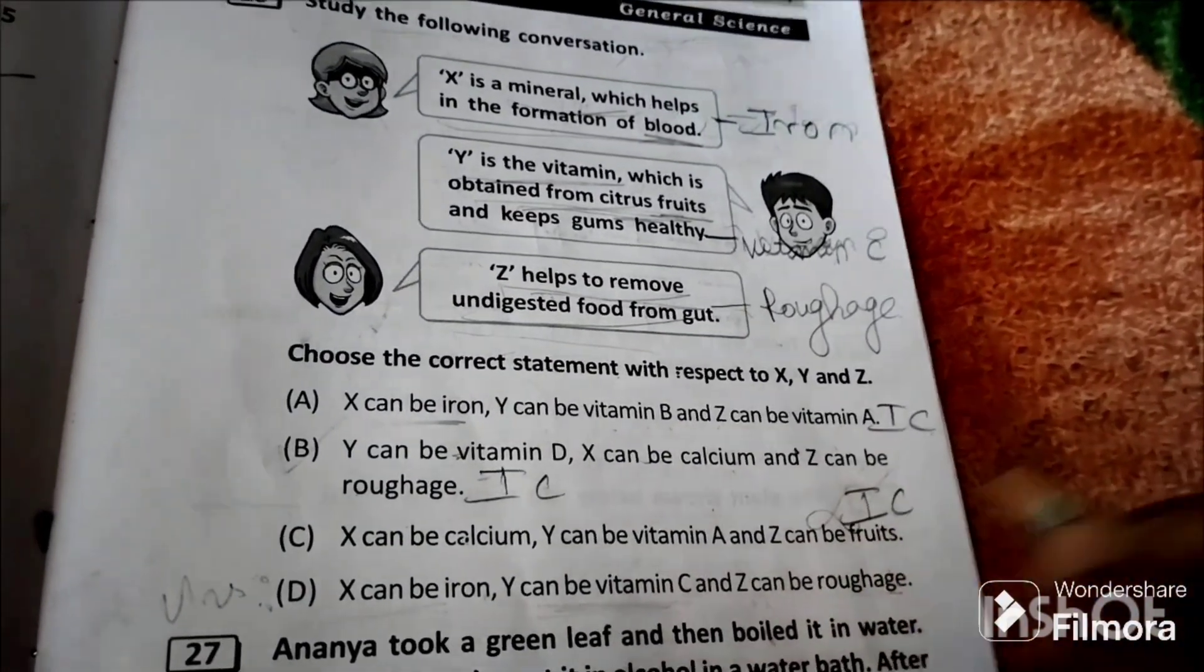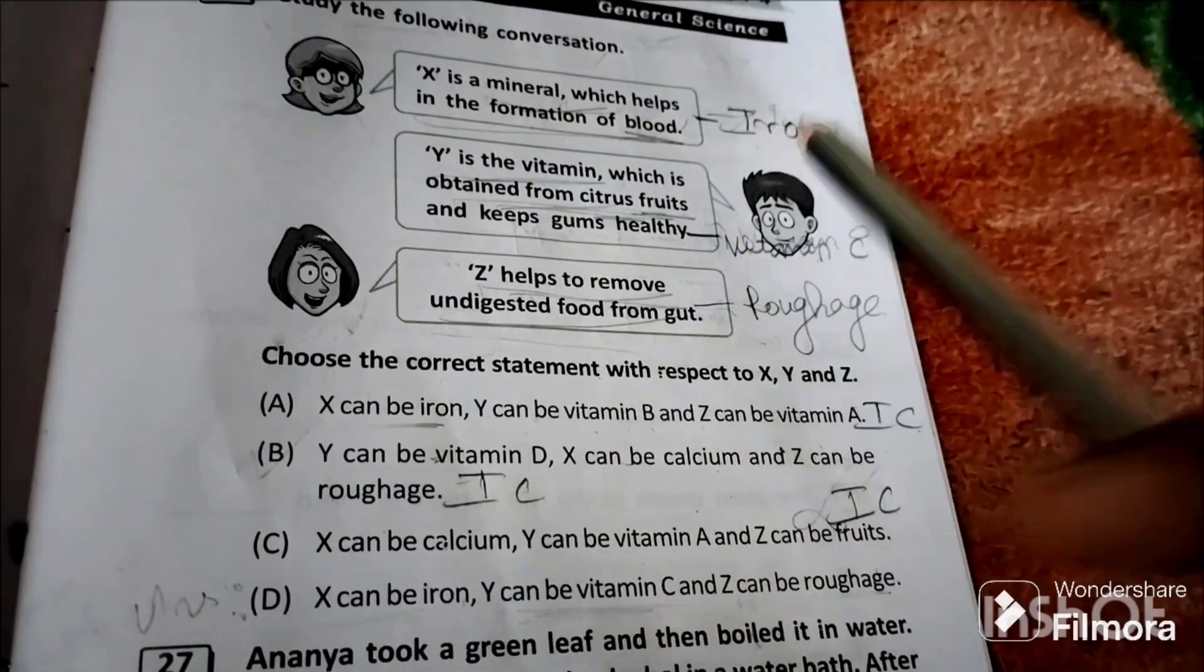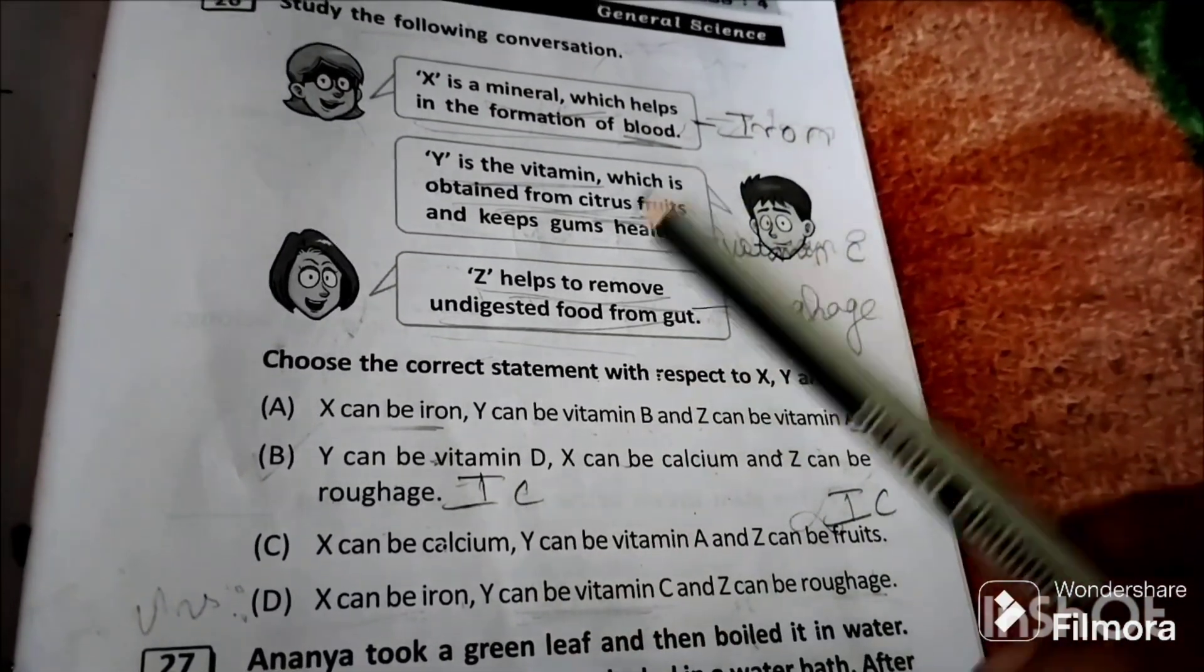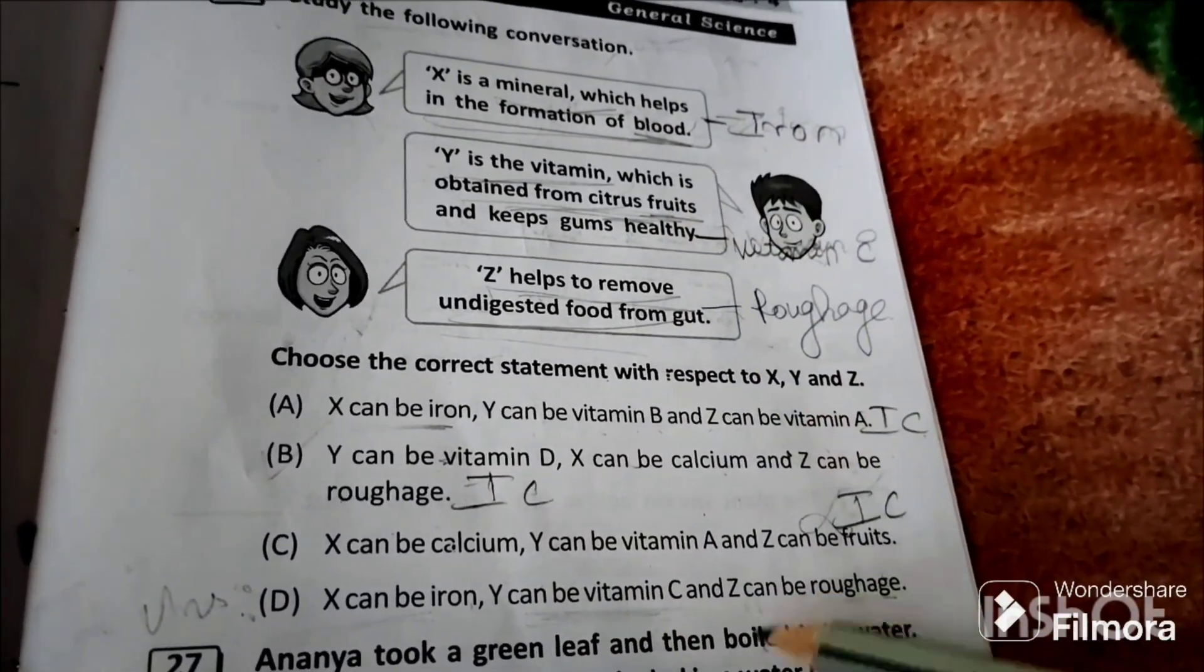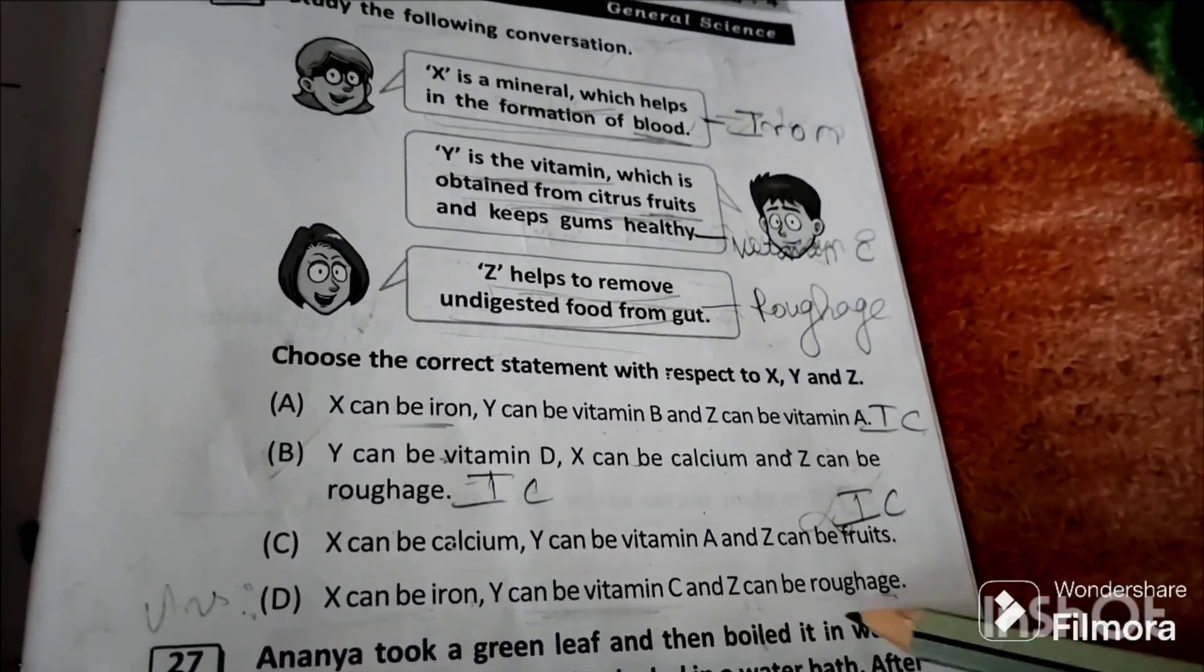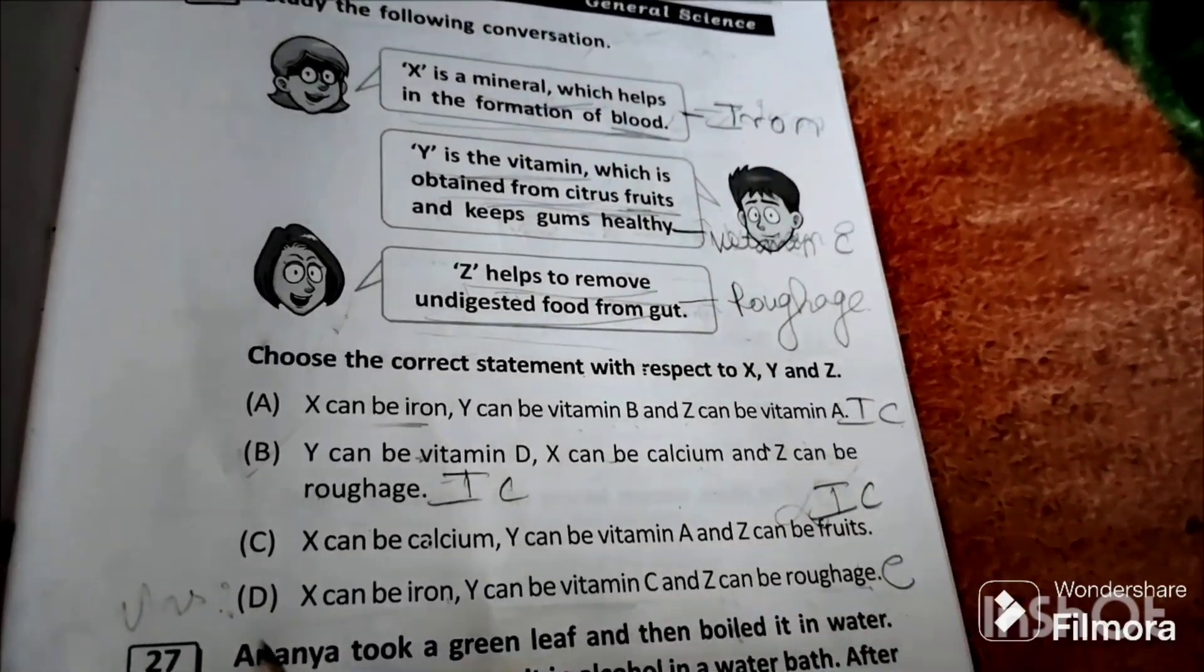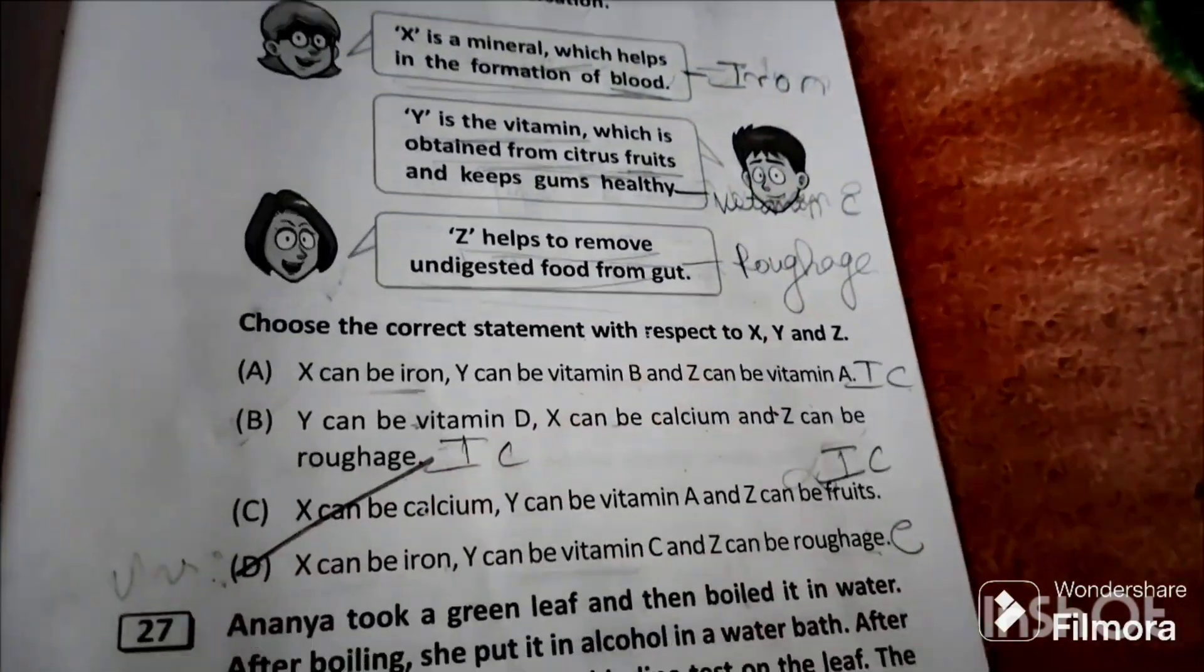Option D: X can be iron is correct, Y can be vitamin C is correct, and Z can be roughage like spinach. So this is the correct statement. Answer is option D.